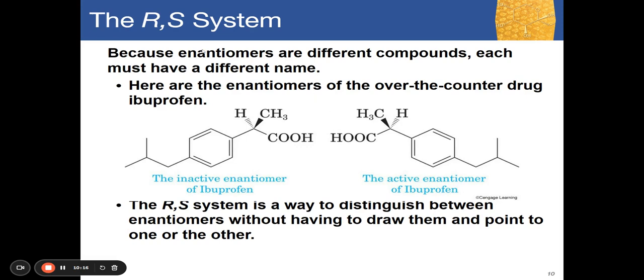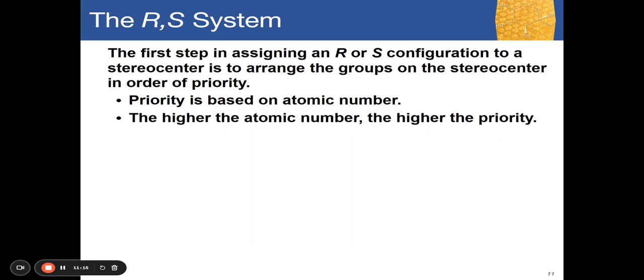Now we move on to the RS system. Because enantiomers are different compounds, each must have a different name. Here is an example using the over-the-counter drug ibuprofen — our pain reliever. One enantiomer is the inactive form and the other is the active form. We assign the R and S system to distinguish which ibuprofen is active and which is not.